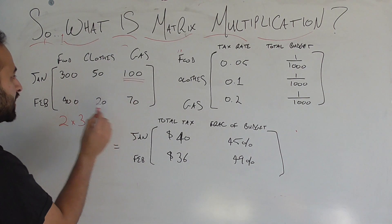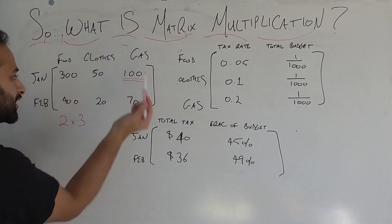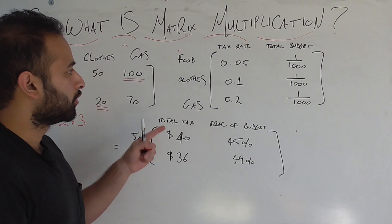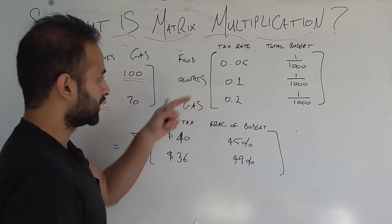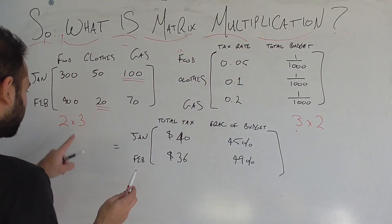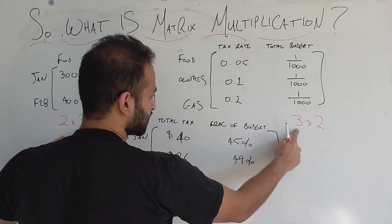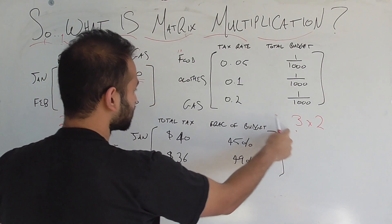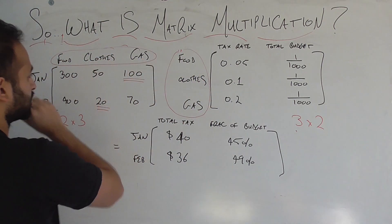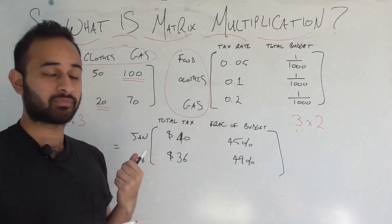So for example, this hundred says that in January, you spent a hundred dollars on gas. This twenty says that in February, you spent twenty dollars on clothing. Now the second matrix here is three by two, so it's three by two. We see that the dimensions are going to be fine, because this dimension three matches to this dimension three. Why does it match? Because the stuff it relates to is the same stuff it related to in the other matrix, so that's why the dimensions have to match here, okay?